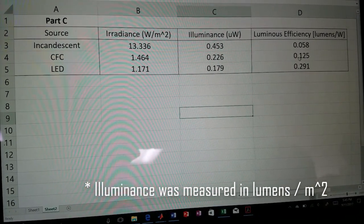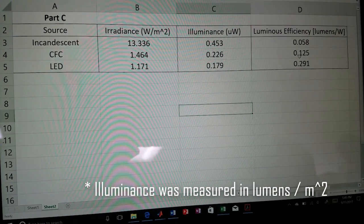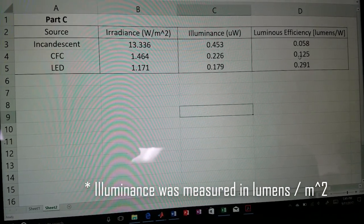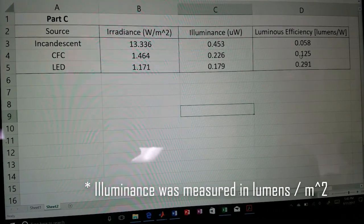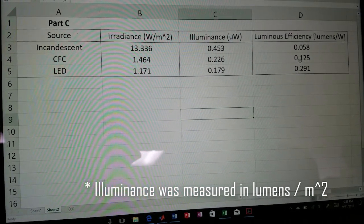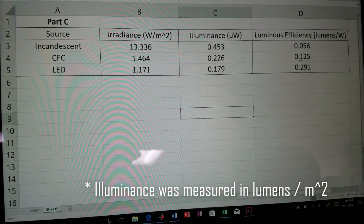From these efficiencies, you can see that the LED is really efficient at 0.291 lumens per watt, and the incandescent and the CFC are a lot less efficient because they lose a lot of energy to heat.